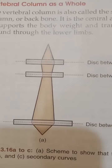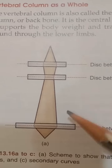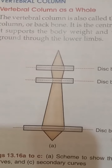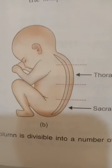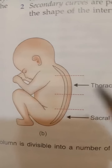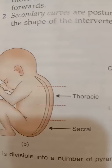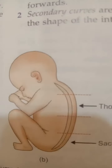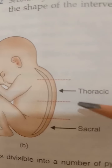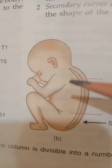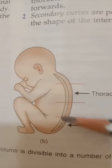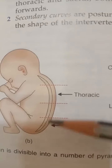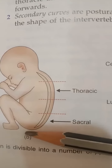Now let's see the curvature of the vertebral column. The curvature is shown in the sagittal plane and the coronal plane. In the sagittal plane, there are two types of curvatures: primary curvature and secondary curvature. The primary curvature is present at birth due to the shape of the vertebral body, and it is present in the thoracic and sacral regions, both of which are anteriorly concave.